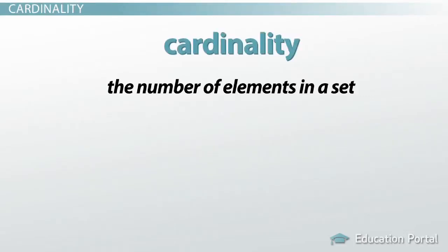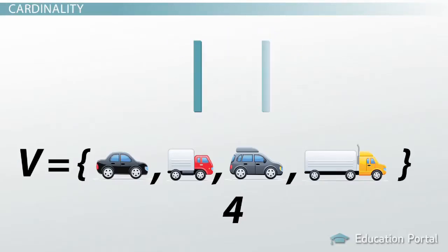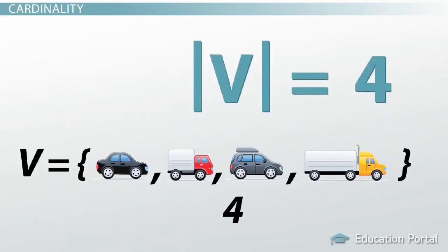The cardinality of set V, which equals {car, truck, van, semi}, is four — there are four elements in set V. There are two ways I have seen the symbol for cardinality. The first has straight bars, like the absolute value symbol. In symbols: |V| = 4. The cardinality of set V is four.